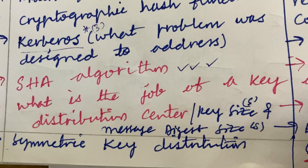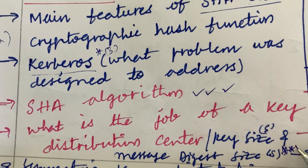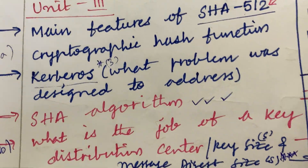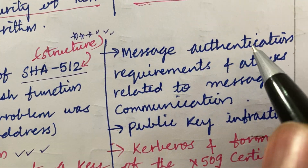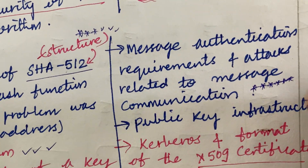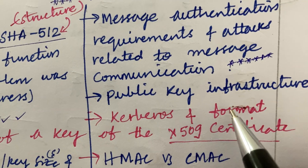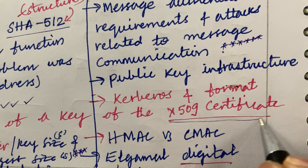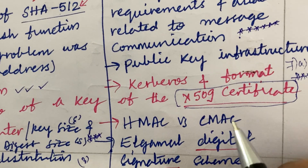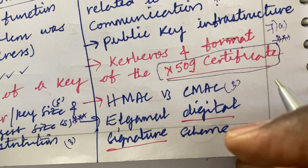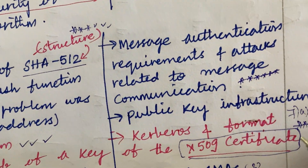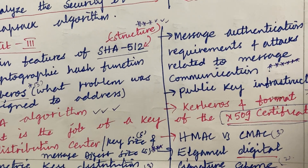What is the role of a key distribution center, as well as key size and message digest size, are said to be 6B questions. Symmetric key distribution is also said to be a 3-mark question. Message authentication requirements and attacks related to message communication have been asked several times as per analysis of previous year question papers. Public key infrastructure, Kerberos, and the format of the X.509 certificate are very important and certain questions expected in 7A. HMAC versus CMAC is a 3-mark question, and the ElGamal digital signature scheme may be a 2-mark question — these may appear in 7A and 7B.